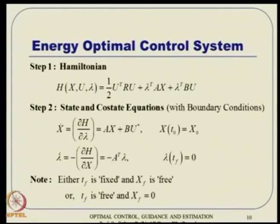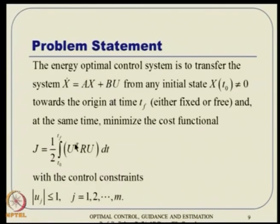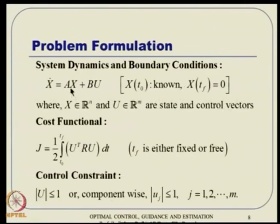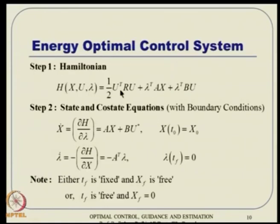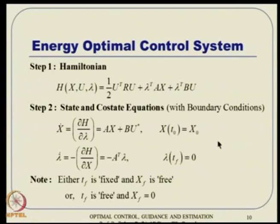How do we solve this? We apply necessary conditions of optimality. First we define the Hamiltonian H = L + lambda-transpose F, where L is half of u-transpose R u, and lambda-transpose F is lambda-transpose times (Ax + Bu). The state equation x-dot = del-H by del-lambda gives the same state equation with optimal control, and the costate equation lambda-dot = -del-H by del-x = -A-transpose times lambda, with boundary conditions x(T-naught) = x-naught and lambda(T-f) = 0.